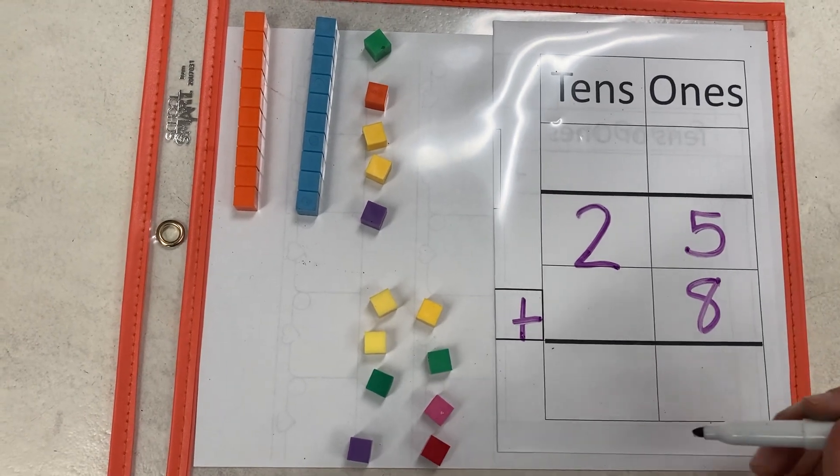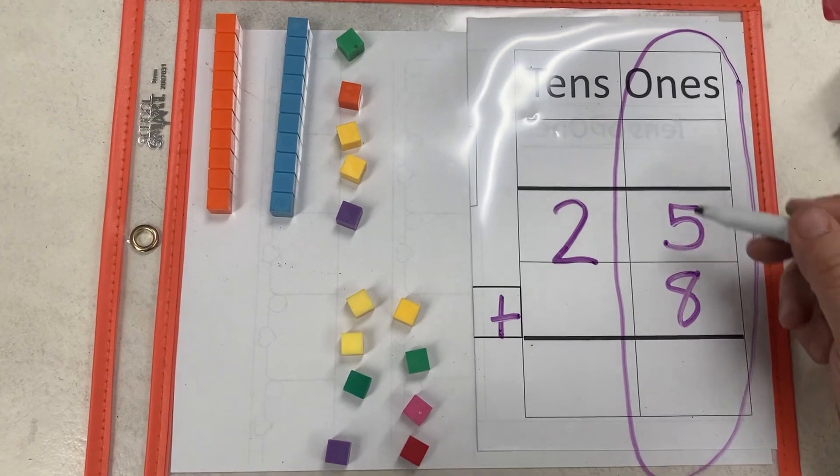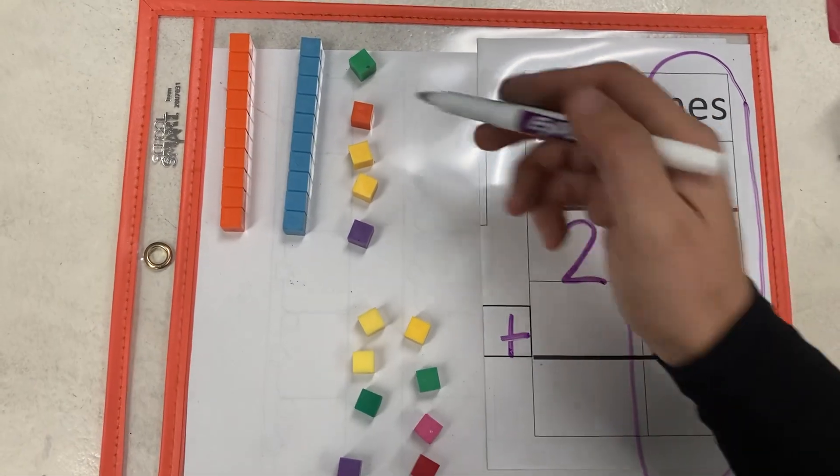First, we add the ones. I'm going to circle up my ones here. 5 plus 8. Let's count and see.